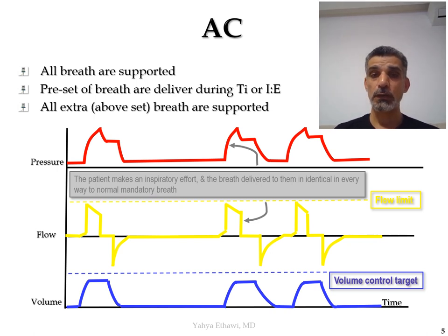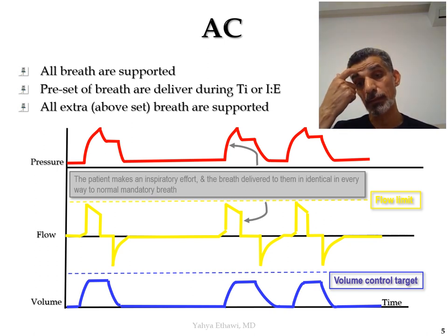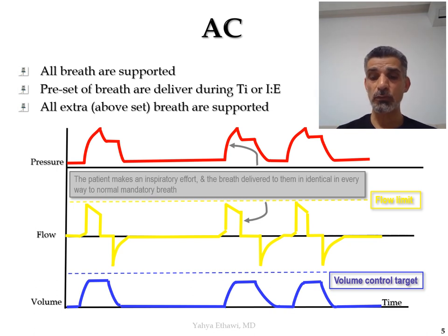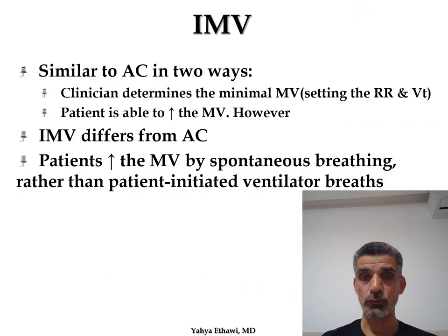The inspiratory time and the ratio between inspiration and expiration are set. Like CMV, the operator sets the PIP and PEEP. There are other parameters you may need to set, such as the rising time and some additional parameters.